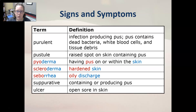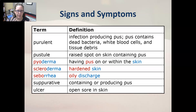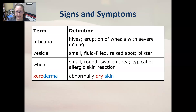Scleroderma means hardened skin — there is an autoimmune disease by that name. Seborrhea means oily discharge; if you have excess oily discharge you will have excessively oily skin. Suppurative is containing or producing pus. Ulcer is an open sore in the skin or mucous membranes.